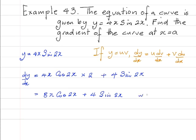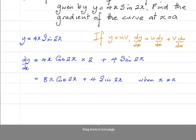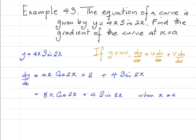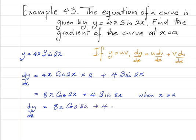Now, when x is equal to a, the gradient — which is dy by dx — would be equal to 8a cosine 2a plus 4 sine 2a.